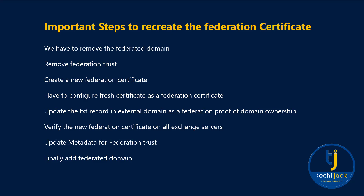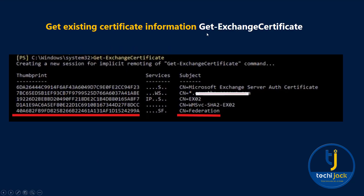To fix the issue, the first step is to get information about the existing Exchange certificate. You can run the commandlet Get-ExchangeCertificate and you will see the thumbprint for the existing certificate. In our case, you can see the CN federation certificate and its thumbprint. Note down this thumbprint as the old or expired federation certificate — it is useful to save it in Notepad.